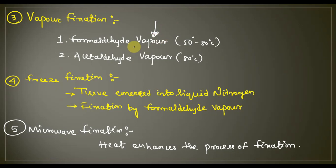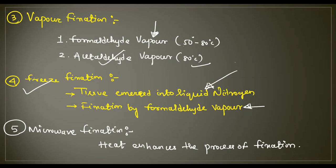Formaldehyde is heated to 50 to 80 degrees Celsius, but acetaldehyde is not vaporized under that condition. Once vaporized, you can use that vapor with a tissue section or the whole tissue part — even a whole organ. Next is freeze fixation: we use low temperature such as liquid nitrogen. A small tissue part is immersed in liquid nitrogen and is completely frozen, maintaining a constant chemical condition.